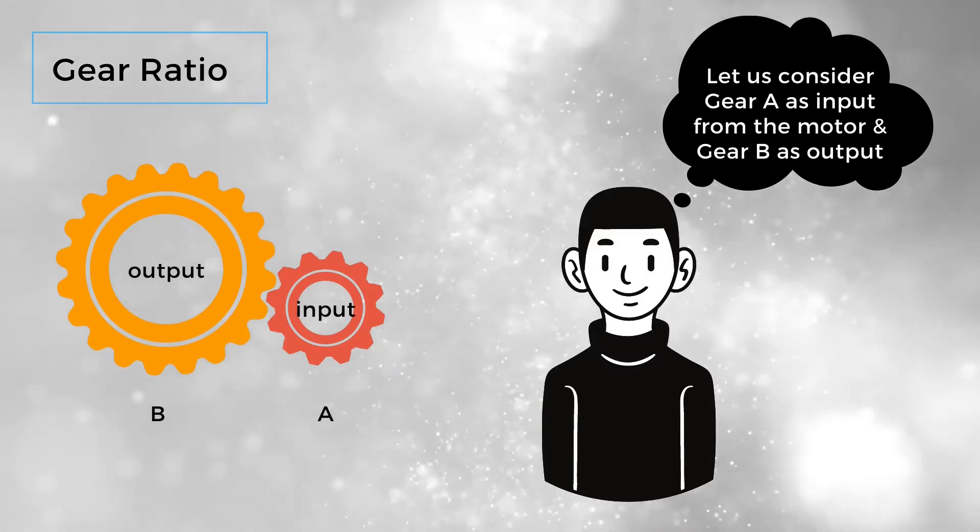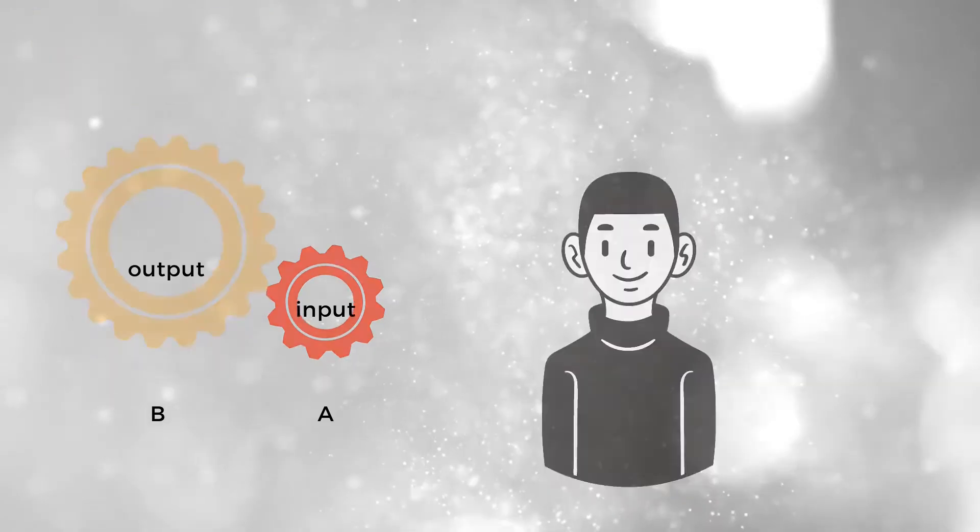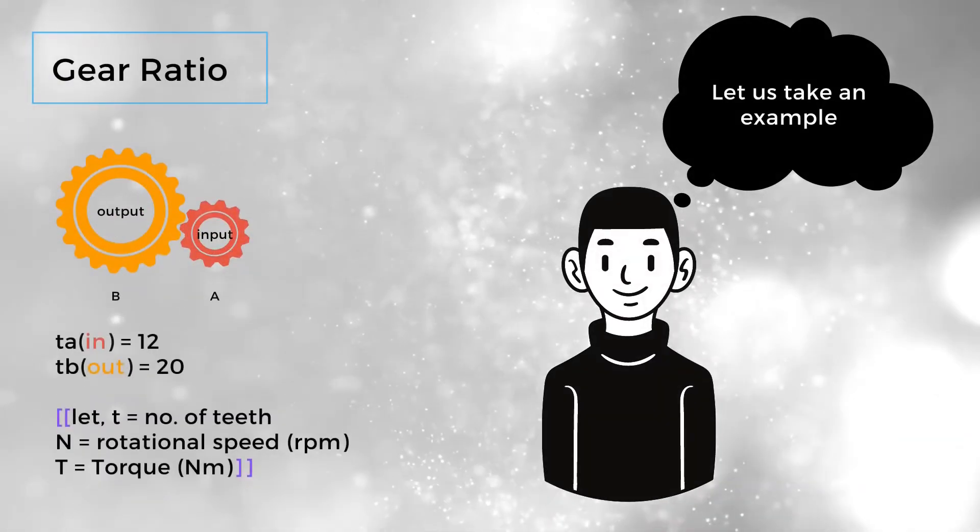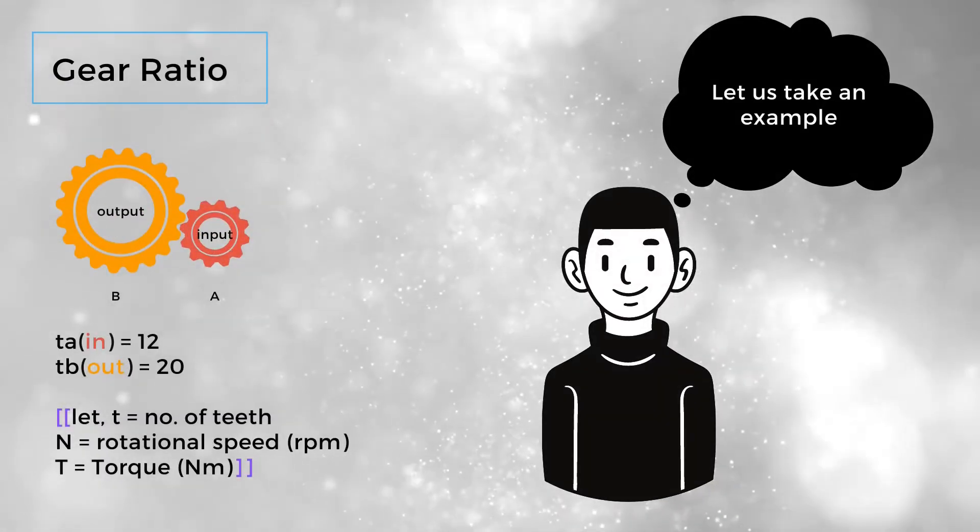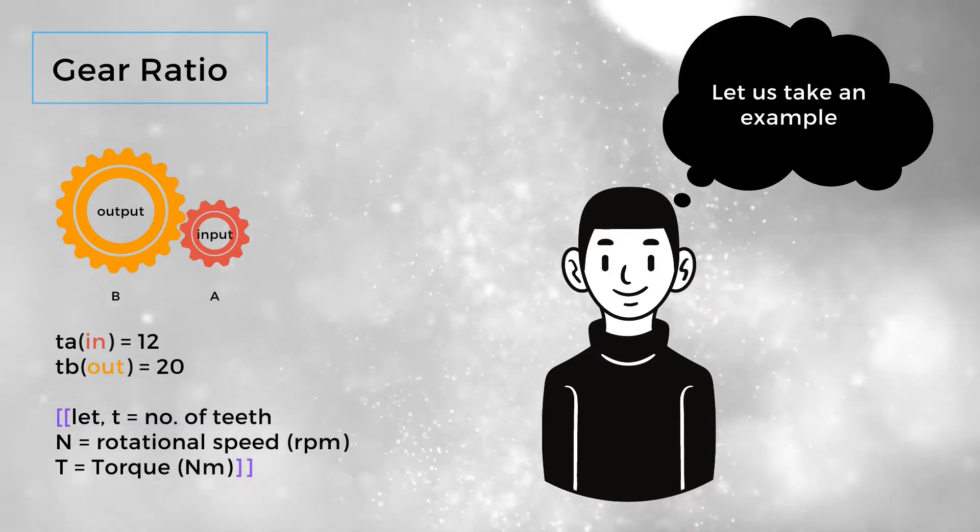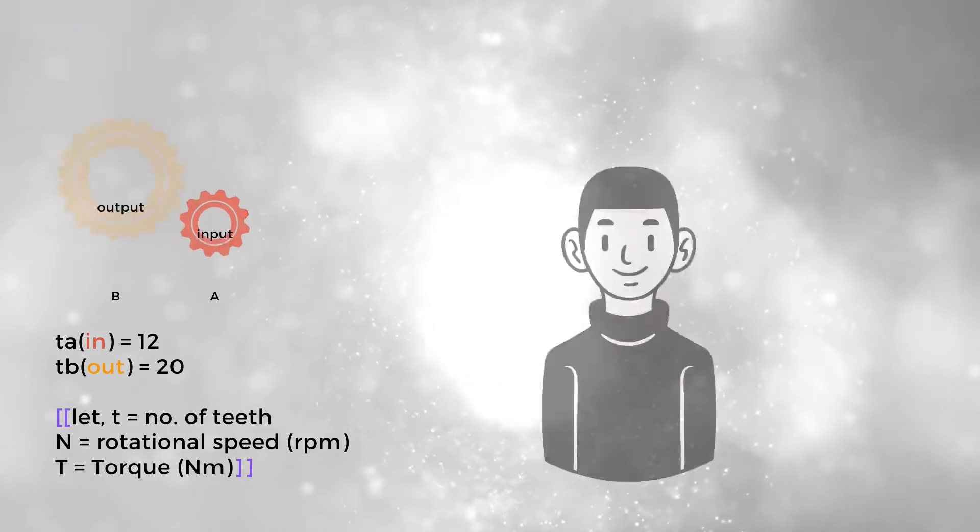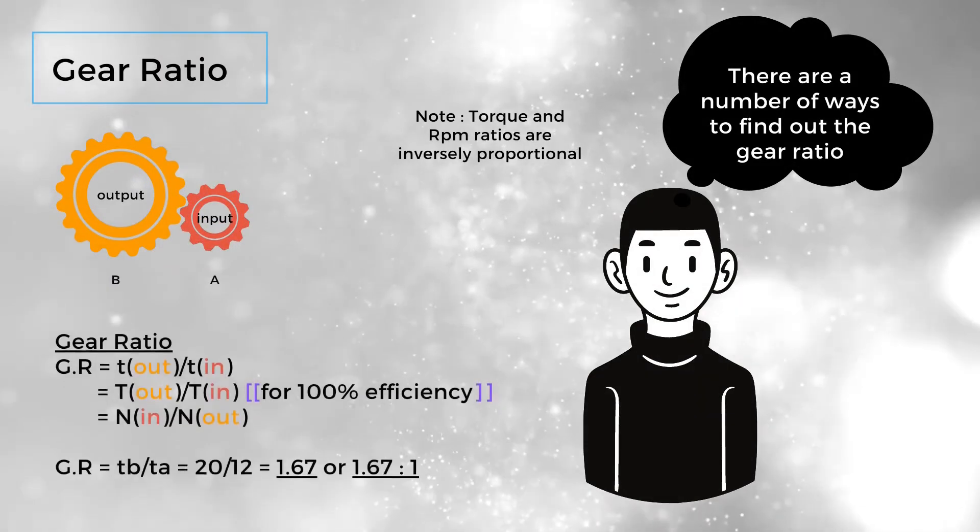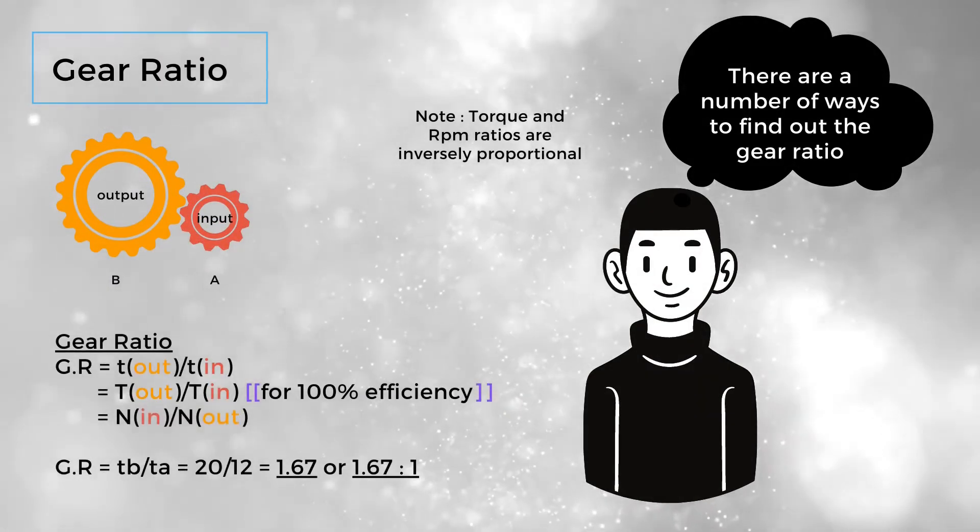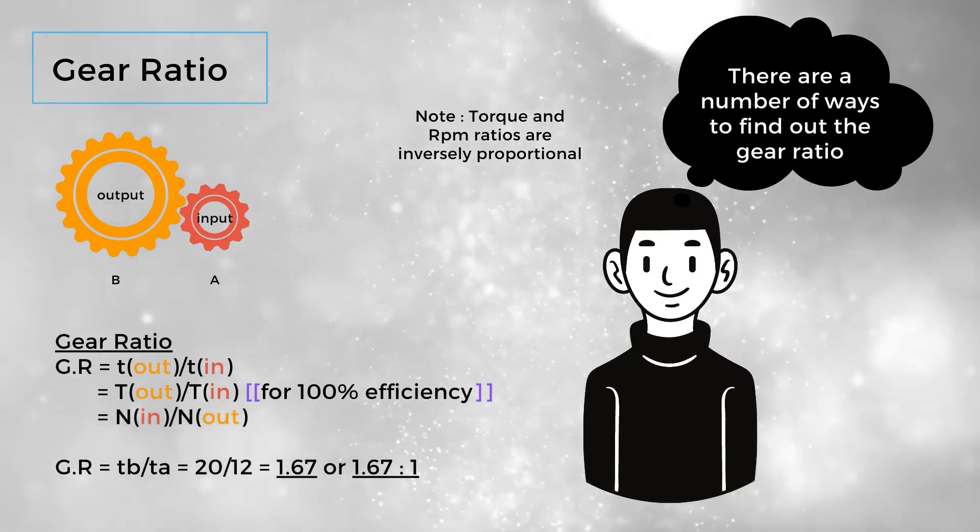Let us consider gear A as input from the motor and gear B as output. Let us take an example. There are a number of ways to find out the gear ratio. We will consider the number of teeth per gear.